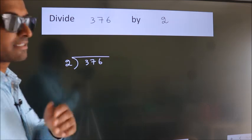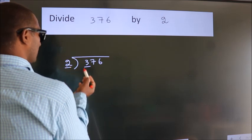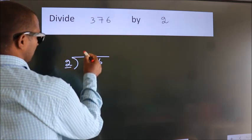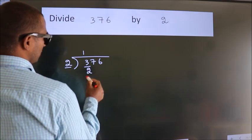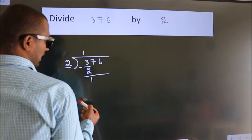Next. Here we have 3, here 2. A number close to 3 in the 2 table is 2 times 1, which equals 2. Now we should subtract. We get 1.